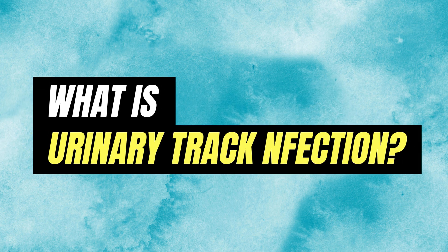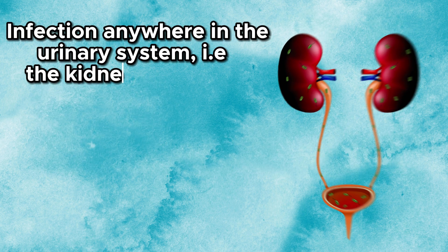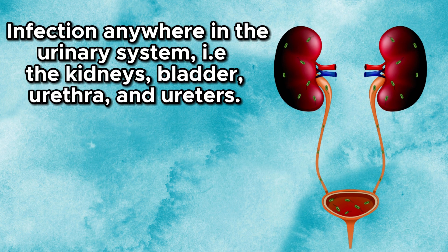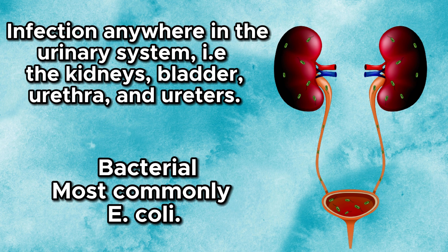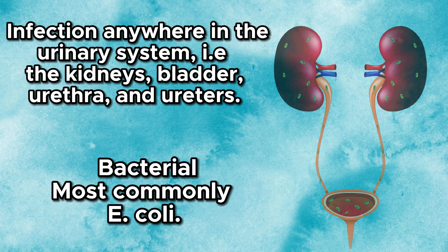First things first, what is a urinary tract infection? It's an infection that can occur anywhere in the urinary system, which includes the kidneys, bladder, urethra, and ureters. These infections are usually caused by bacteria, most commonly E. coli.